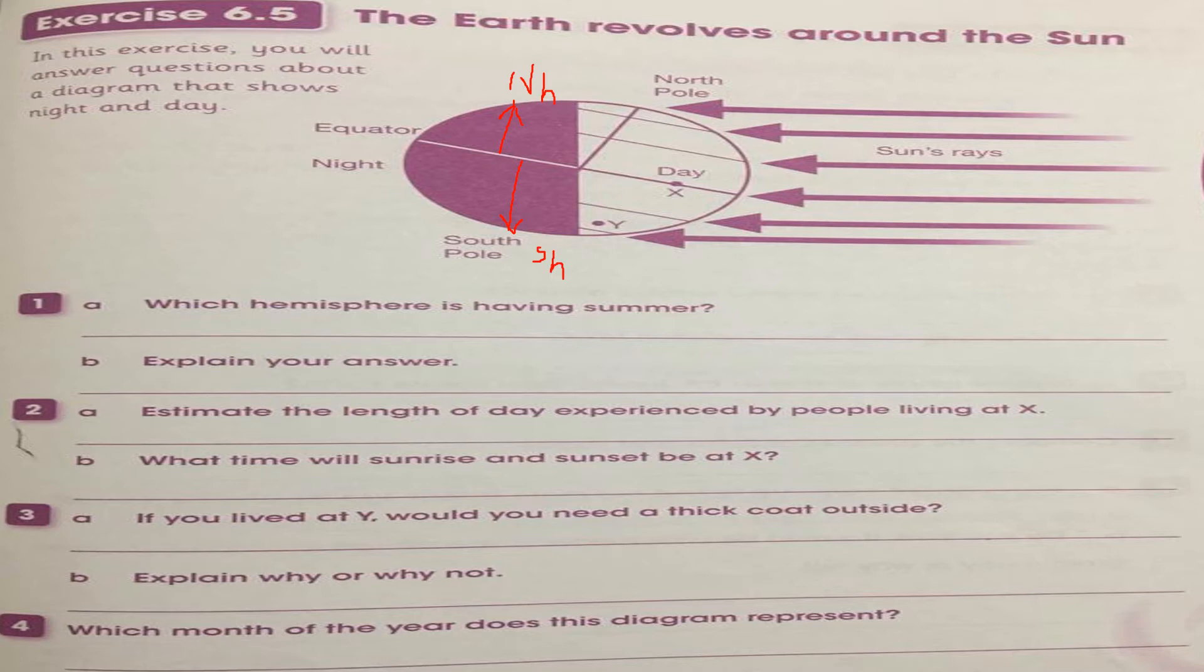In this picture, they ask which hemisphere is having summer. The part which is tilted towards the sun is experiencing summer. Right now, it's the Northern Hemisphere.